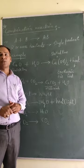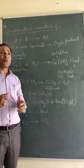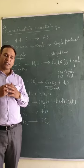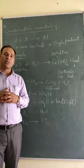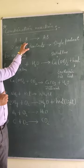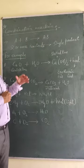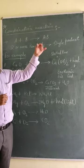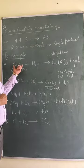Today we will talk about combination reaction. The word itself defines it: when two or more reactants combine to form a single product, it is called a combination reaction. Suppose we have reactants A and B — they combine together and form product AB. Such a reaction, where two or more reactants form a single product, is called a combination reaction. For example, consider calcium oxide.